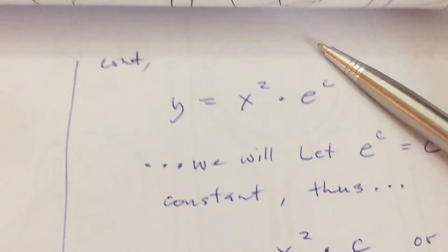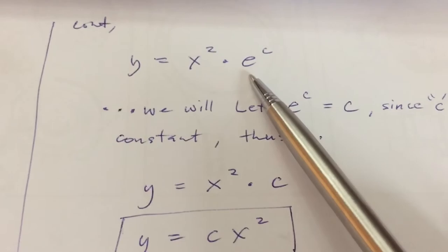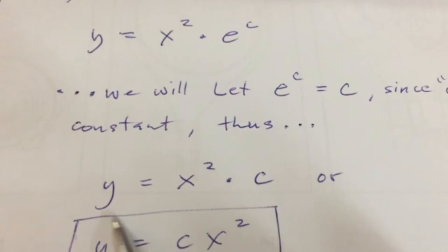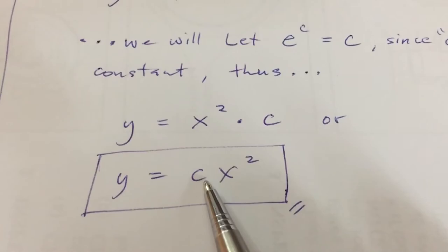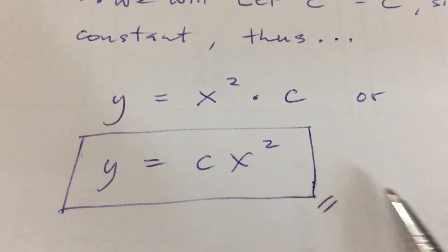And after that, by substituting c for e raised to the c, this is the result. Arranging it properly, y equals c times x squared, and this is our general solution, our final answer. I hope this makes sense. Thanks for watching.